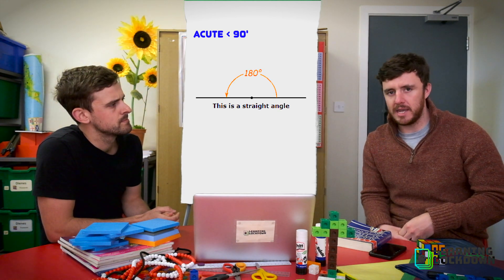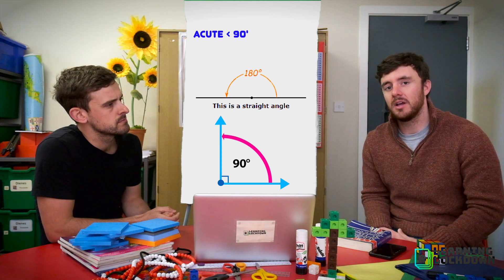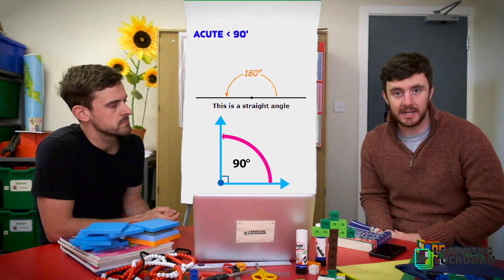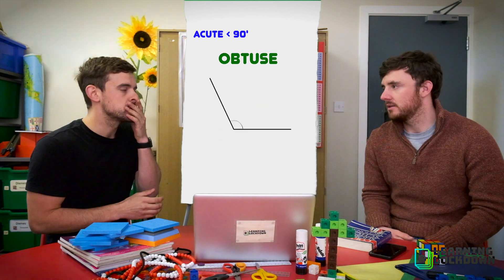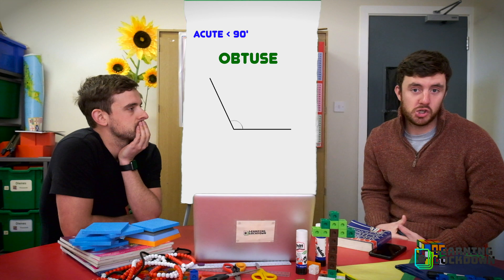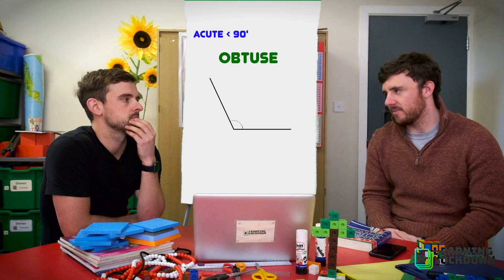So therefore any angle that's between 90, our right angle, and 180, our straight line, is larger than a right angle and we call it an obtuse. Sorry, it's always scary. It's called an obtuse angle and you've got a good way to remember obtuse avenues.